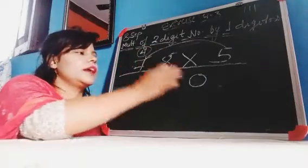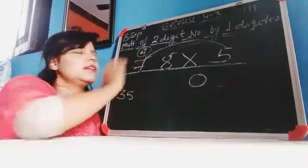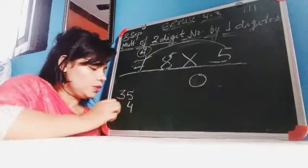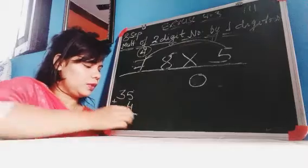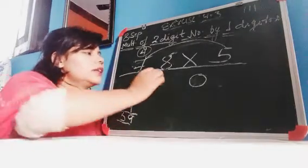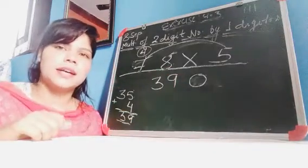And 4 is carry from this number. Then we add this 4 here, 35 plus 4 will be 39, and this is 390. Understand, dear students.